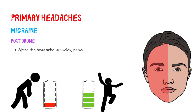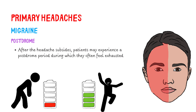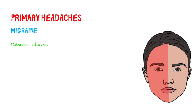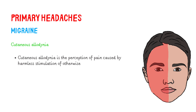After the headache subsides, patients may experience a postdrome period during which they often feel exhausted, but some feel a mild elation. During migraine attacks, actions such as touching the scalp and shaving can cause pain called cutaneous allodynia — the perception of pain caused by harmless stimulation of otherwise normal skin.